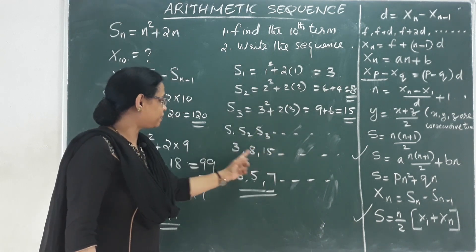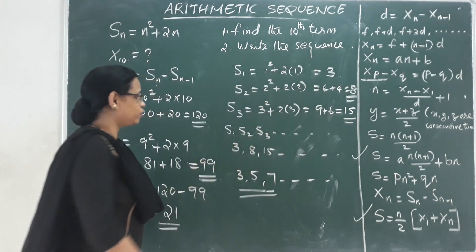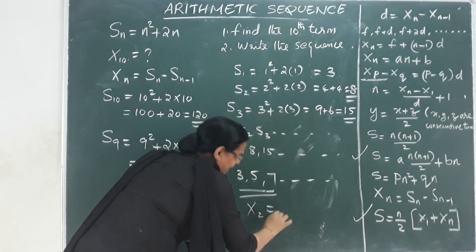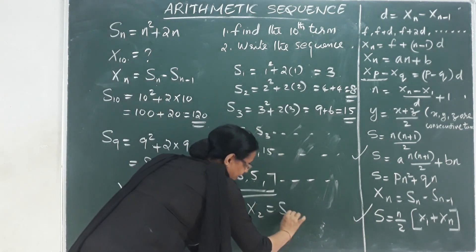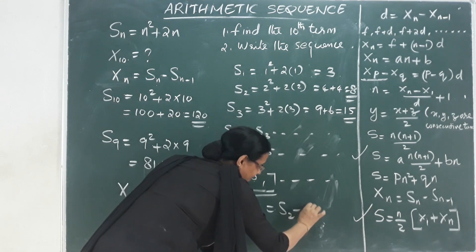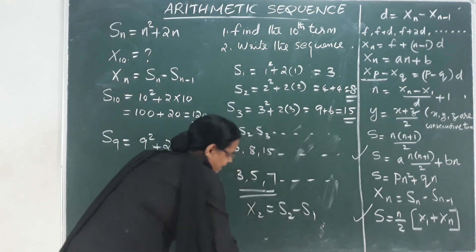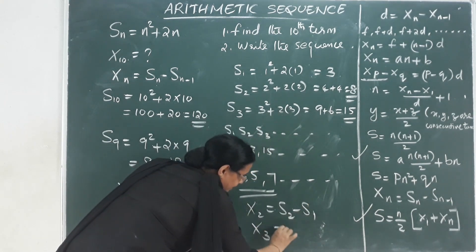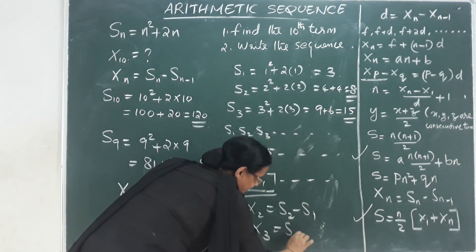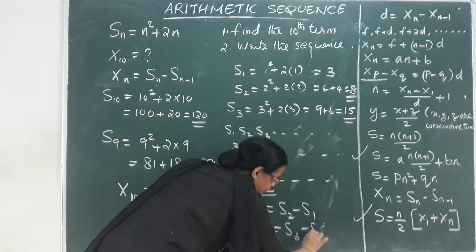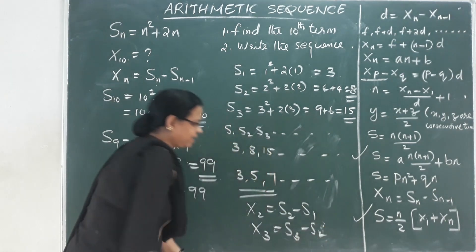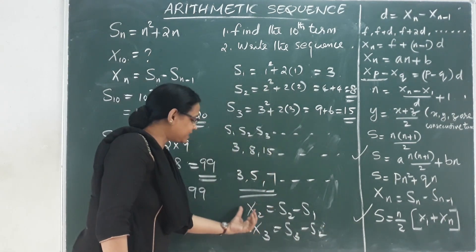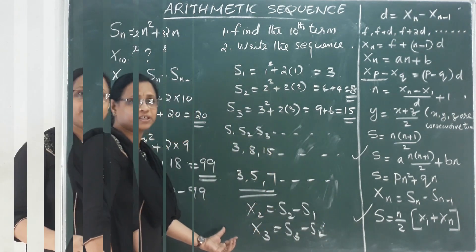To find each term in general, we subtract consecutive sums. The second term is S2 minus S1, and the third term is S3 minus S2, subtracting the previous sum from the current sum each time.